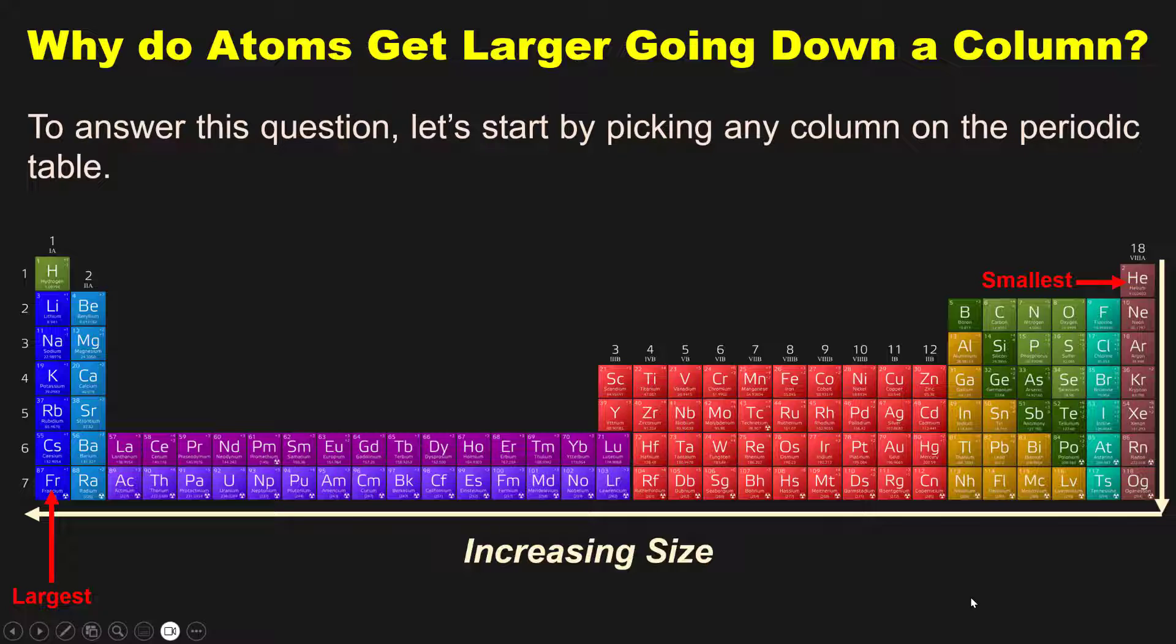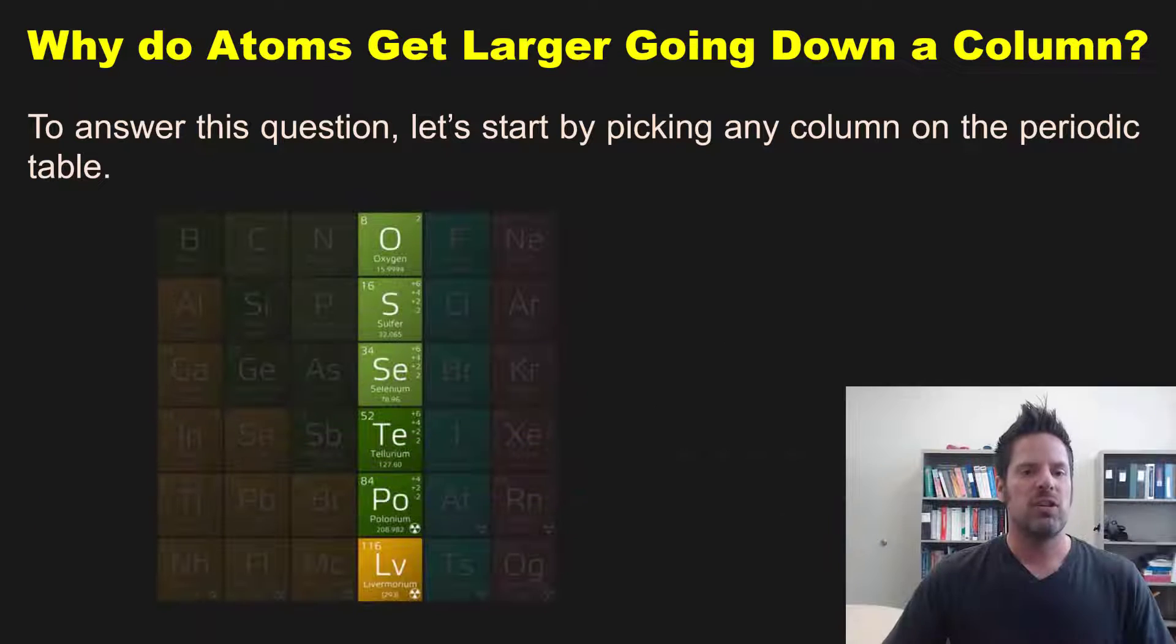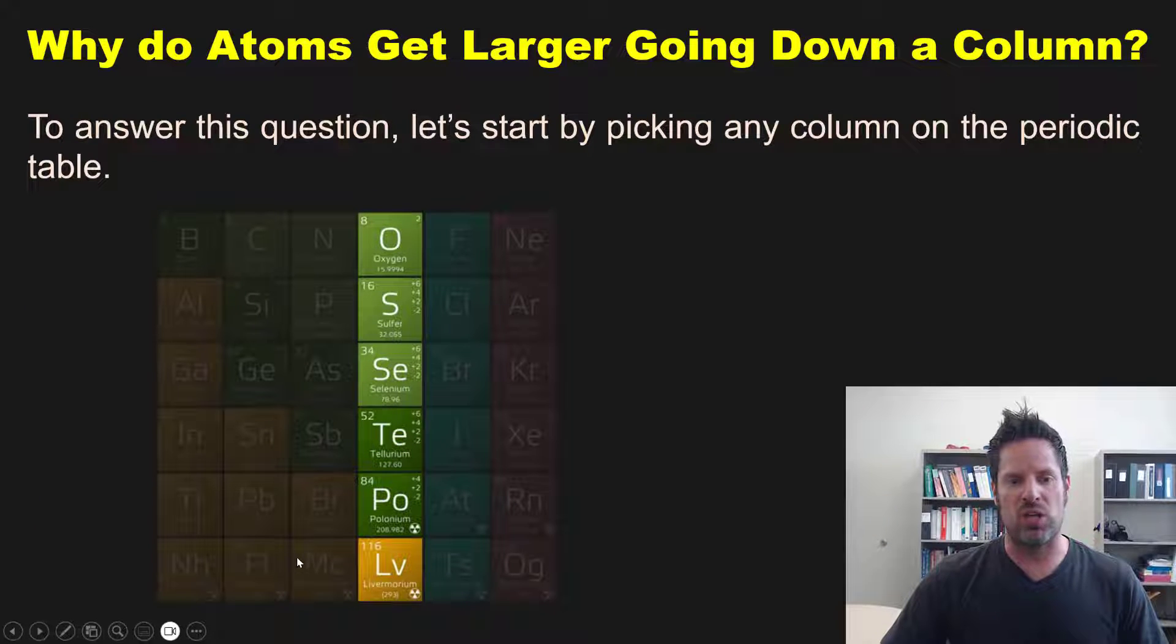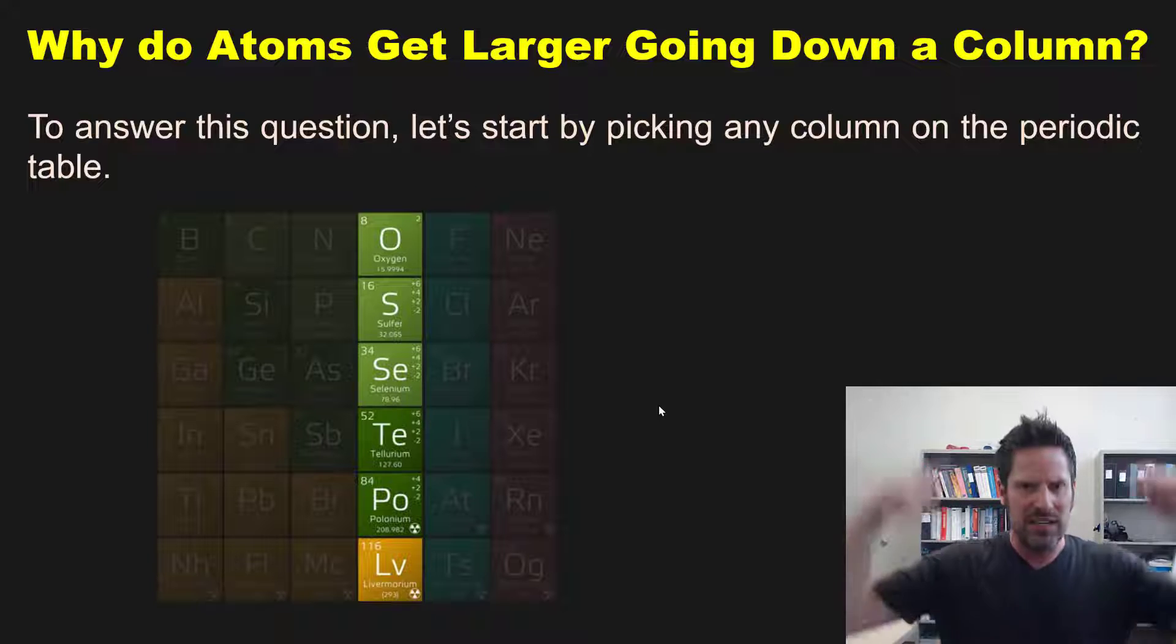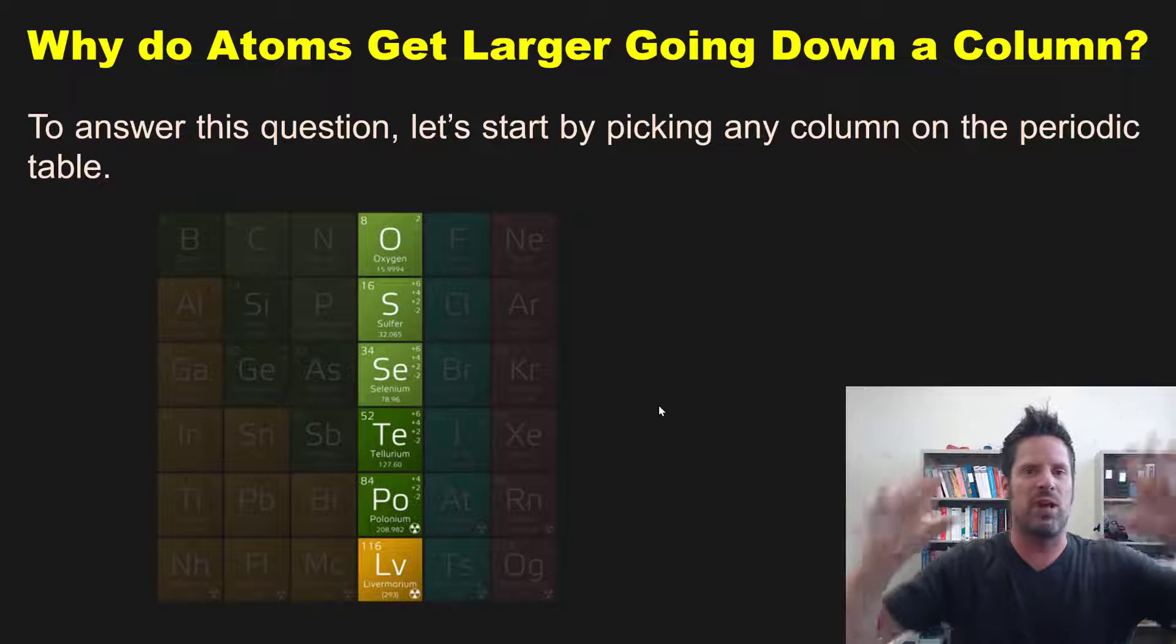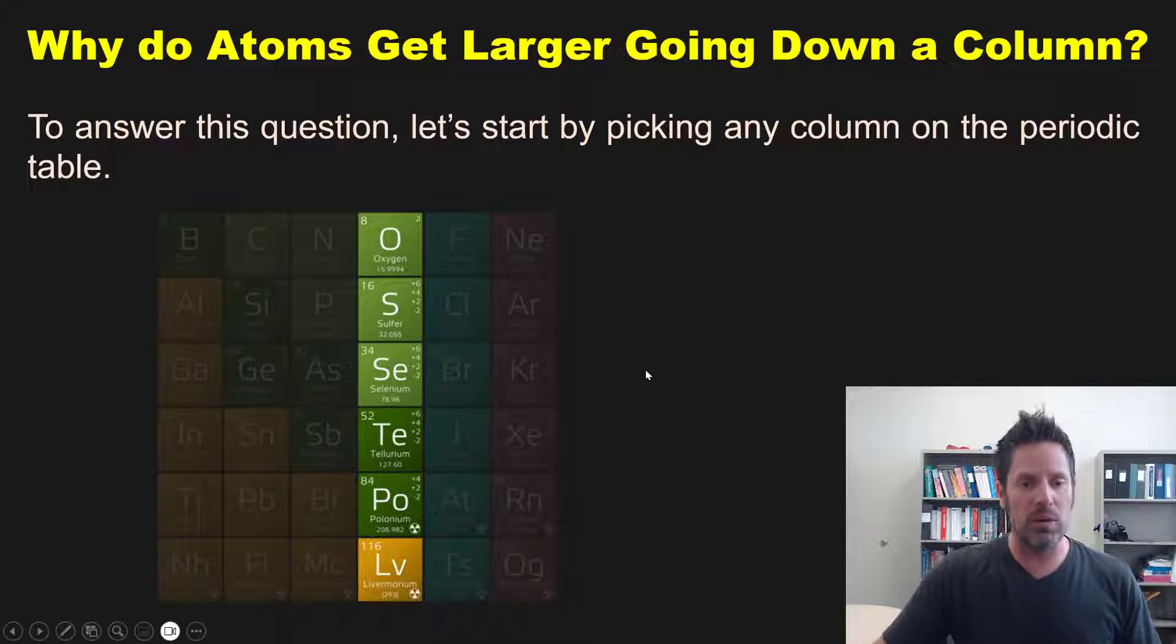To answer this question, let's start by picking any column on the periodic table. For example, let's grab this oxygen column and zoom in on it more closely. Drawing on our knowledge of electron configurations that we discussed in an earlier chapter, the outermost orbital for the element in this block, oxygen at top, is going to be a 2p orbital.